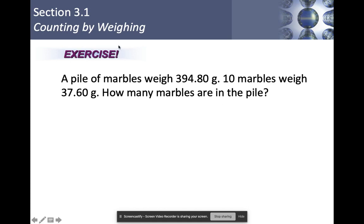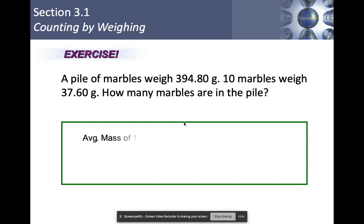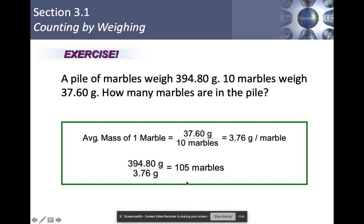A good example of counting by weighing is if I gave you a pile of marbles and said this is how much these marbles weigh: 394.80 grams. If I were to give you 10 marbles that weighed 37.60 grams, how many marbles are there in this pile? I would figure out the average mass of one marble: 37.60 grams divided by 10 equals 3.76 grams per marble. Then dividing 394.80 by 3.76 gives me 105 marbles.